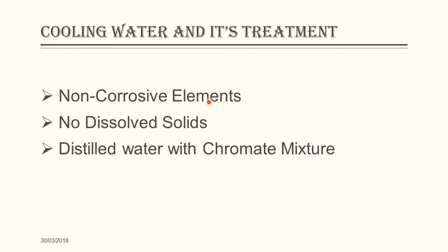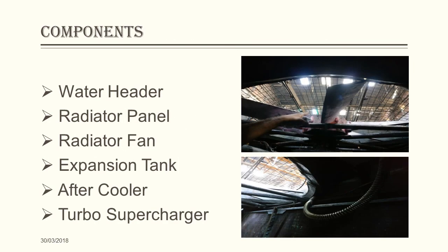Water is changed if hardness and chloride content is higher than the recommended limit. Therefore, fresh distilled water with chromate mixture is filled in the locomotive. The various components of the water cooling system are the water header, radiator panel, radiator fan, expansion tank, after cooler and turbo supercharger.